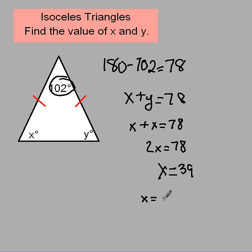Now since x and y have the same value, then we would write x equals y equals 39. So in this case, our base angles each have a measure of 39 degrees.